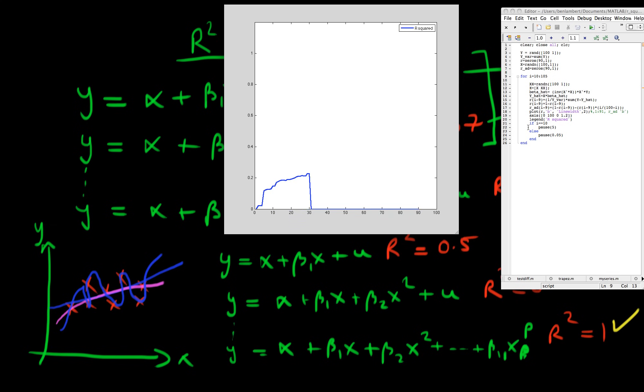And the horizontal axis here illustrates the number of random variables X which I'm adding to my model. So it's just complete noise being added to my model. And the Y value indicates that as I add this complete rubbish, I get R squared getting closer and closer to one.